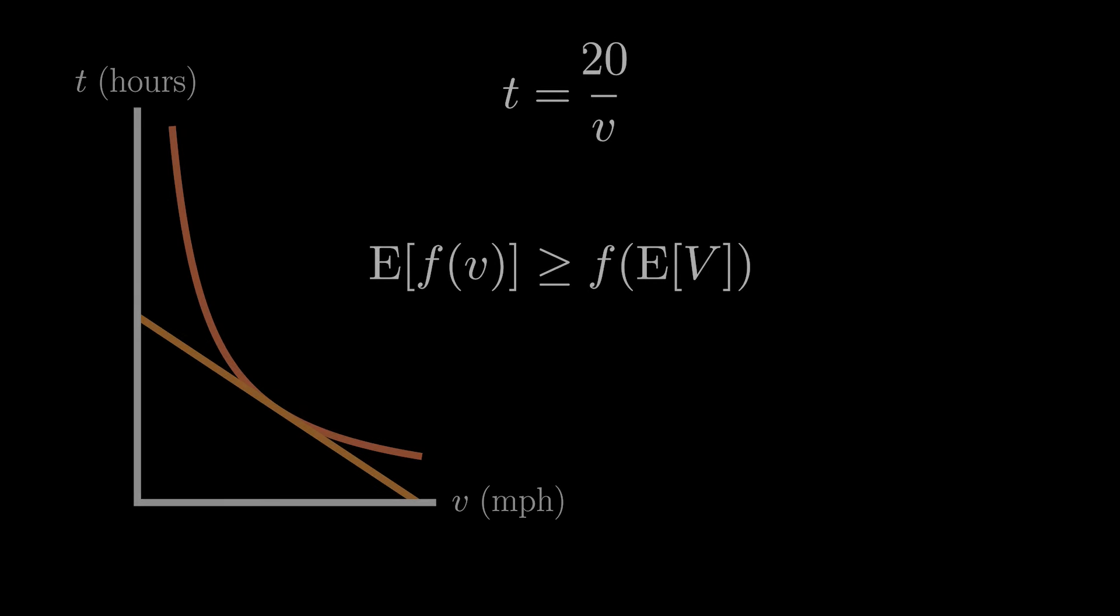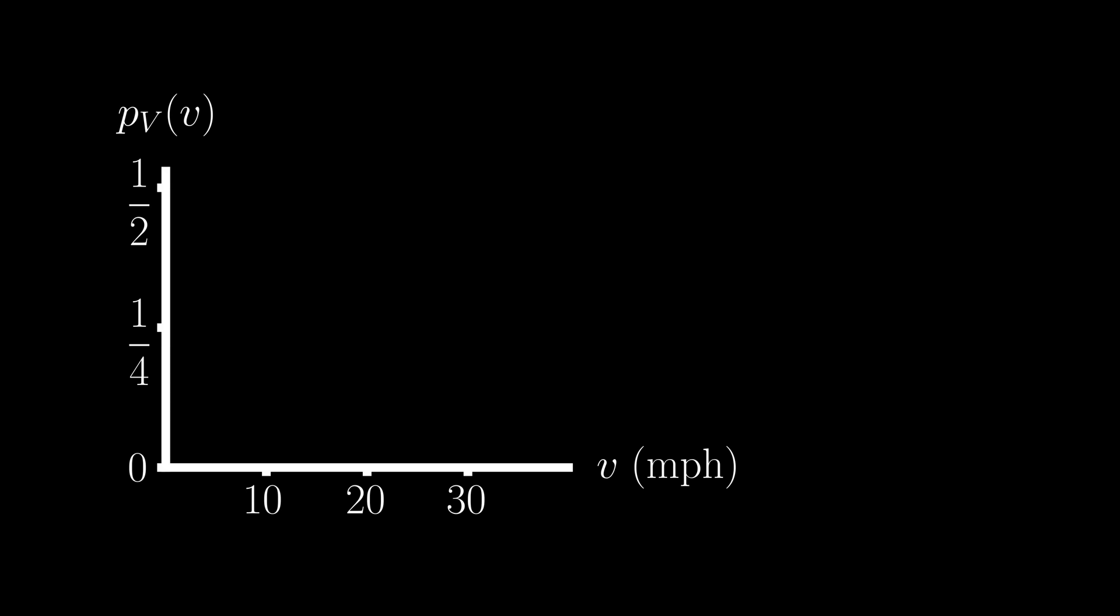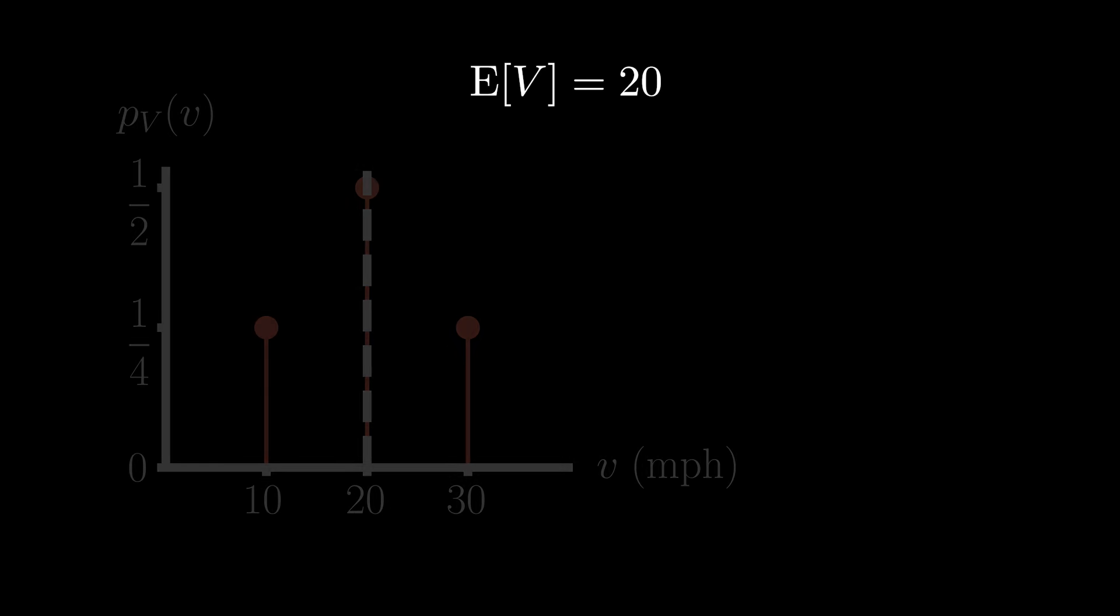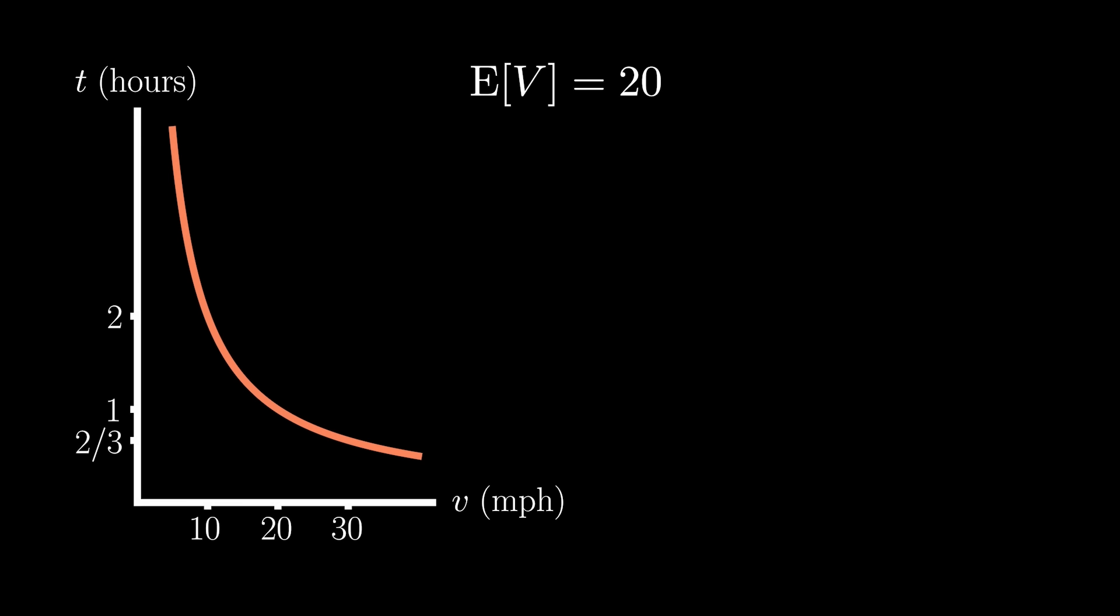Now let's assume that our travel speed is uncertain, and that is due to uncertainty in traffic conditions. Based on our own judgment, there is a 25% chance that your average travel speed will be 10 or 30 miles per hour, and there is a 50% chance that your average travel speed will be 20 miles per hour. I can therefore compute the expected average travel speed as we've done multiple times in this video, and I can then feed that value into my relationship between travel time and velocity. Doing so, we arrive at one hour. If I'm going to travel 20 miles at a speed of 20 miles per hour, then unsurprisingly, I should arrive at my destination in one hour.